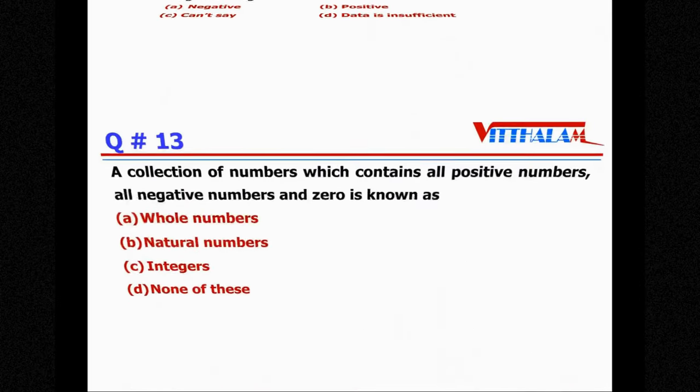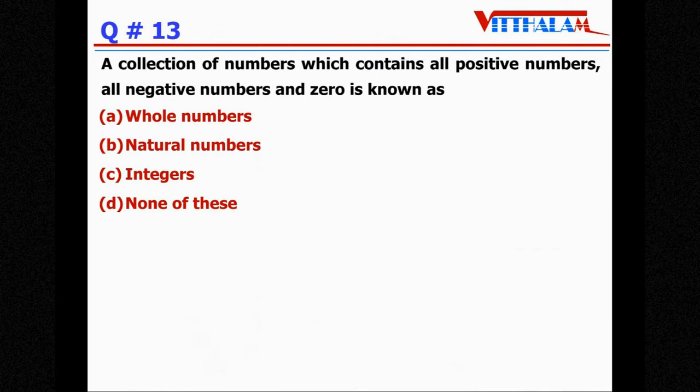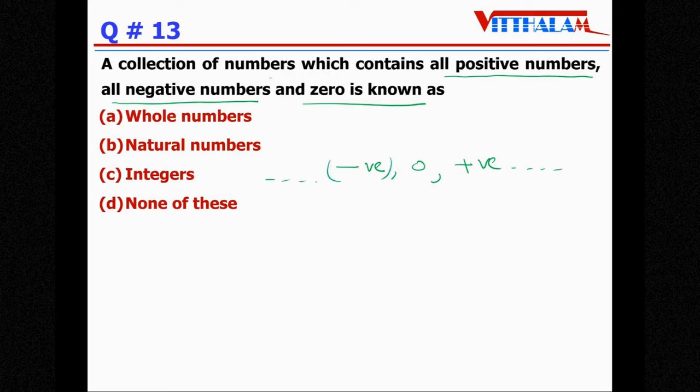Next, a collection of numbers which contains all positive numbers, all negative numbers and 0 is known as? So negative number, 0 and all positive numbers, that is nothing but integers. So see, positive numbers are natural.